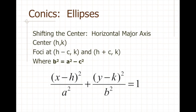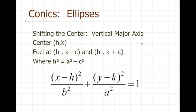Now what happens when I shift the center of the ellipse? Actually, not much — it's a lot like the equation for a circle. The relationship b squared equals a squared minus c squared still holds, and the structure looks just like the circle equation, just with major and minor axes to deal with. For a vertical major axis, the locations of the axes swap.